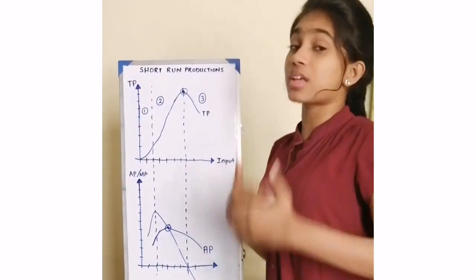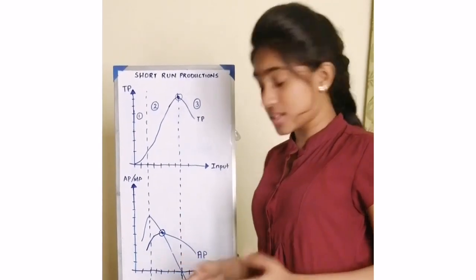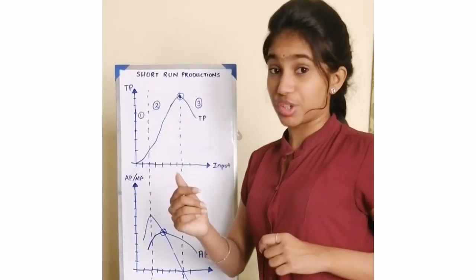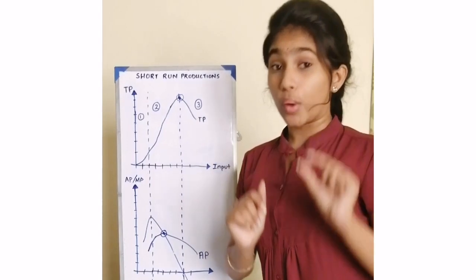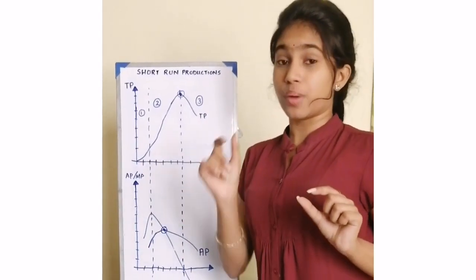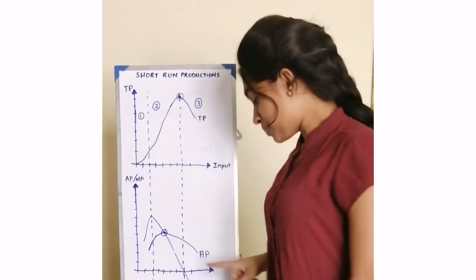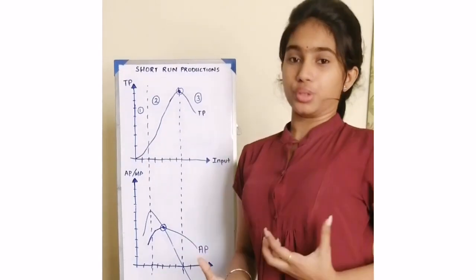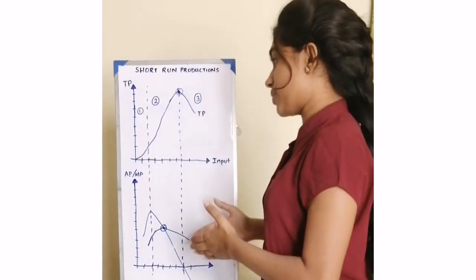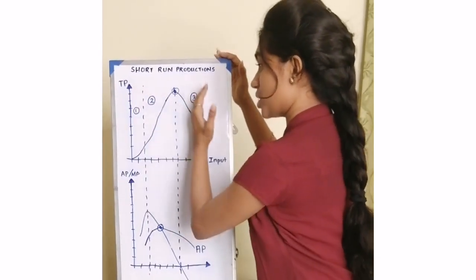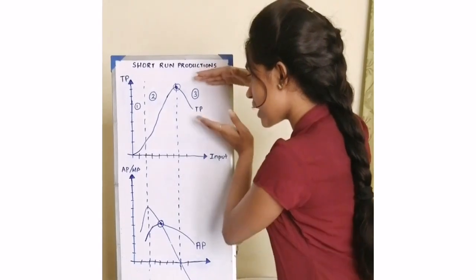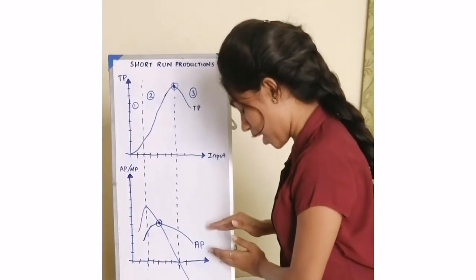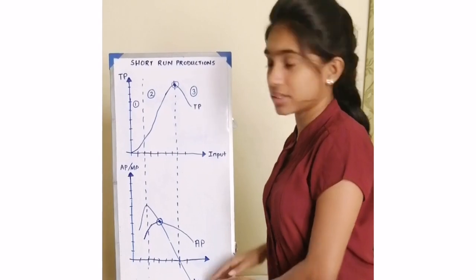The total product is the output generated by the inputs. The marginal product is the additional unit generated when the input is increased by one unit. The average product is the output per unit. There are 3 stages that connect the total product, the average product, and the marginal product.